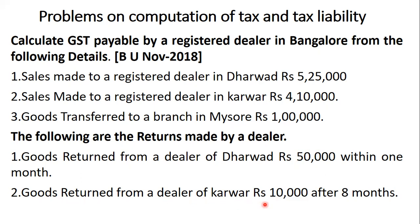Goods returned from a dealer of Karwar — 4,10,000 after eight months. He made a sale of 4,10,000 to a dealer in Karwar, but those goods are being returned after eight months. Any goods which are returned after six months is not allowed as returns. This is the brief structural transaction that we have, and with the help of this we are going to compute the tax liability.